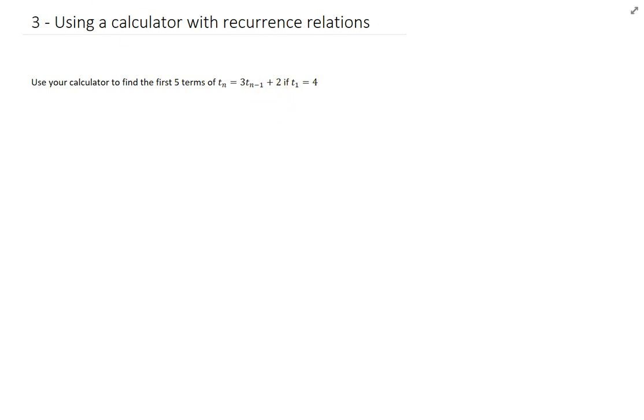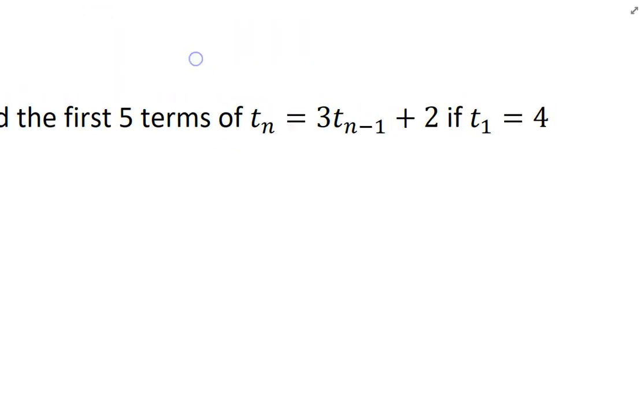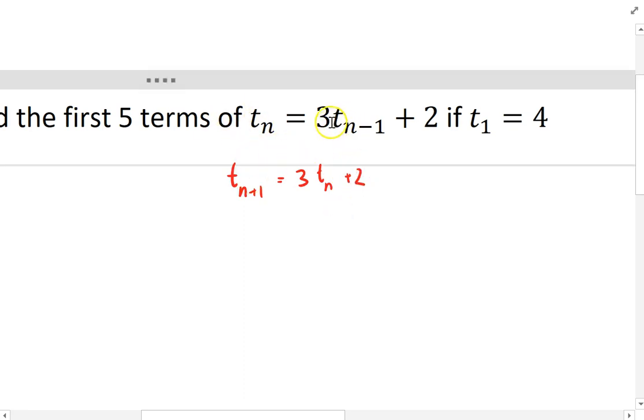And we've actually done that before. To get rid of that n minus 1, we just need to write our formula not as T_n, but instead as T_(n+1). So the next term equals the previous term, which in this case is, or the current term, which is 3T_n plus 2. So those are equivalent. We've talked about that before in class.